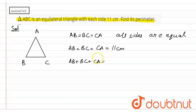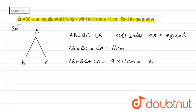As we know that all three sides are equal, so we will simply multiply 3 into 11 centimeters. That is 33 centimeters, which is the perimeter of this triangle. Thank you.